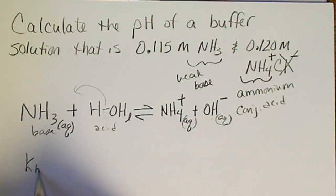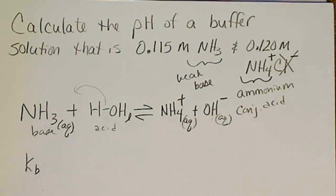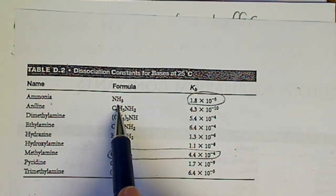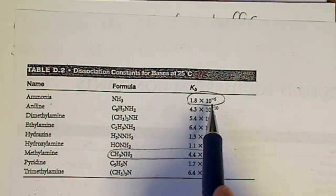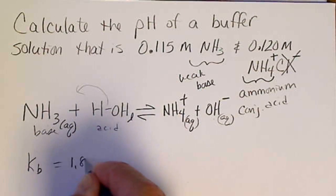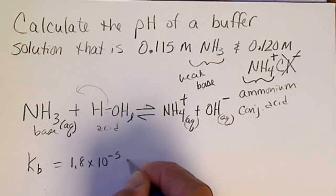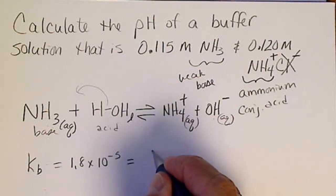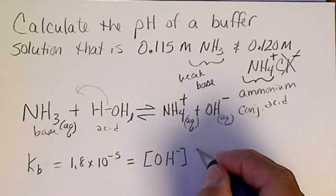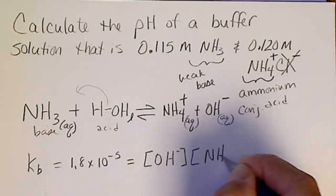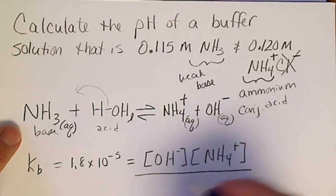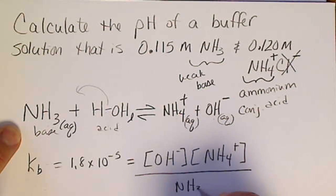So the KB for ammonia is 1.8 times 10 to the minus 5th. So ammonia is our most common weak base. This is 1.8 times 10 to the minus 5th equals the OH minus, which we'll need for our pH calculation, times the concentration of the ammonium ion divided by the concentration of the ammonia.